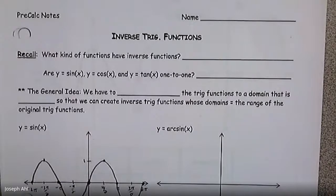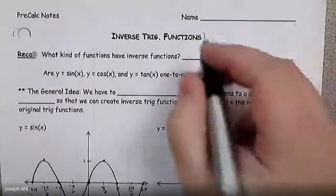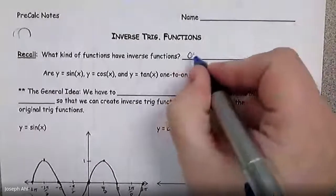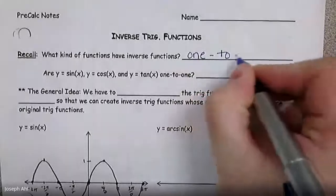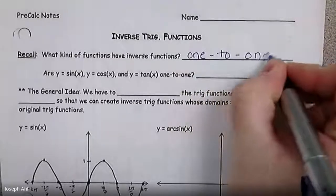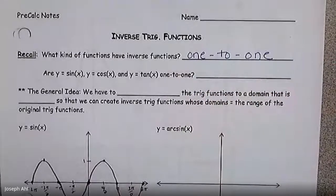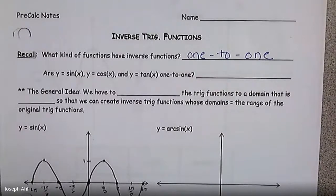This brings us back to unit 3. When we talked about inverses and their relationships to the original functions, really in order to have an inverse, the function has to be one-to-one. If you remember, one-to-one means the x and y values have a one-to-one correspondence — graphically it would pass the vertical line test to be a function and pass the horizontal line test for the inverse to be a function.